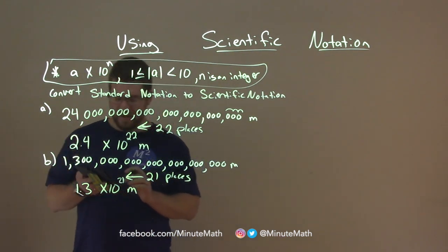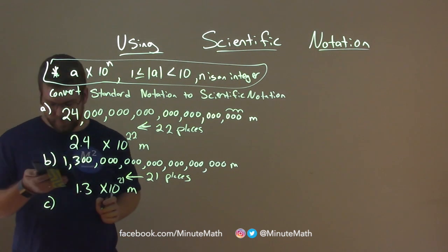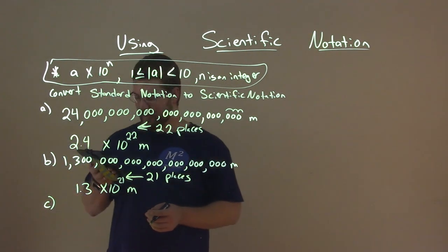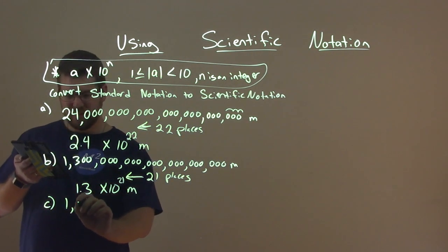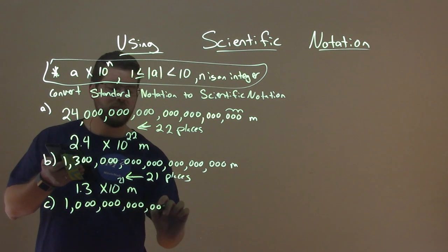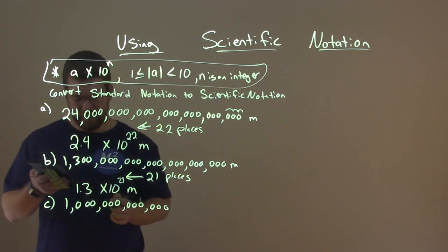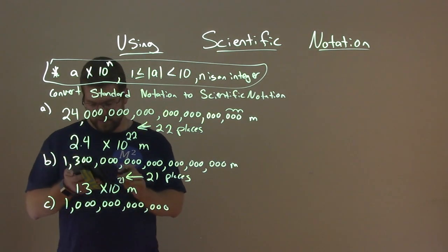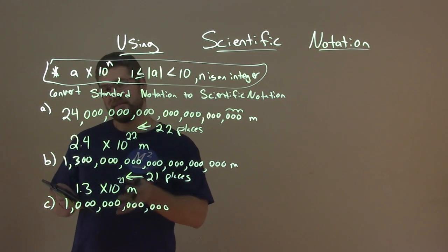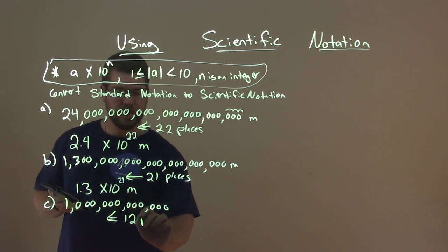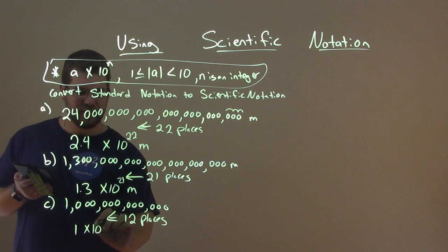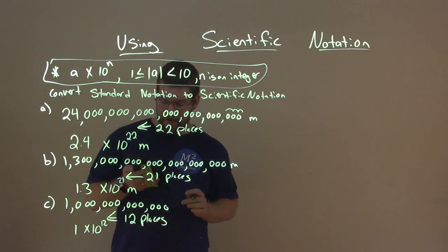Let's do C here. C is the number of stars in the Andromeda galaxy — man, they really like the Andromeda galaxy. That number has 4 sections of 3 zeros, which is 12 places. That simplifies to really just be 1 times 10 to the 12th. That's the number of stars in the Andromeda galaxy.